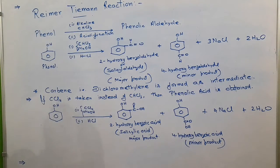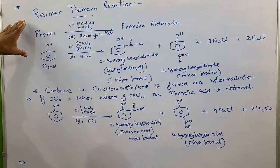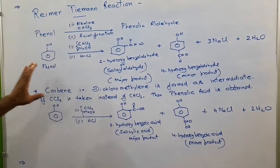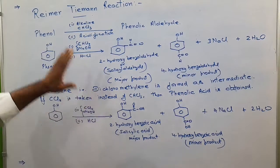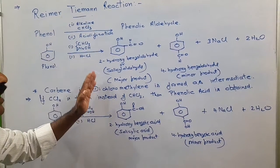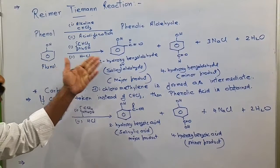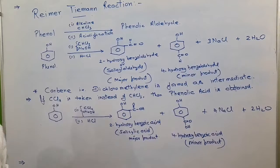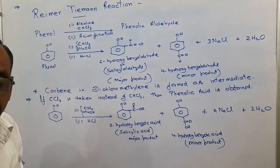So this is our Reimer-Tiemann reaction. In both cases — whether phenol is treated with alkaline chloroform or with CCl4 in alkaline medium followed by acidification — the ortho product is obtained as the major product. Now we will discuss why the ortho product is obtained as the major product.